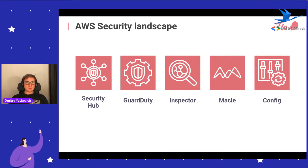Inspector is mostly a malware detection tool - it's agent-based, so we can install an agent on each machine and run it constantly to find malware and viruses. Macie is all about data - it can scan S3 buckets and find PII data to help understand what data is stored in our S3 buckets. AWS Config is a service that collects all the state of services and tracks all changes in our AWS environment.